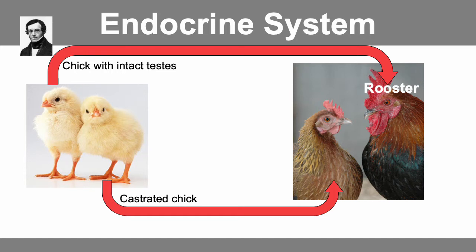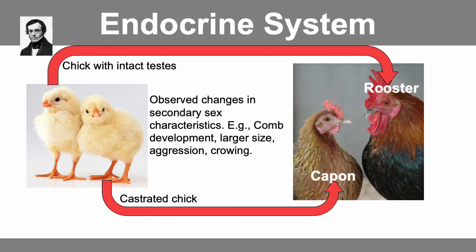A chick with intact testes will become a rooster. If you remove the testes as a chick, you get a capon. It's also important to note that in addition to morphological differences, capons have behavioral differences as well — they don't crow, they don't try to elicit copulations from hens, and they're much less aggressive compared to roosters. Berthold made these observations and wondered what it was about castration or these little pieces of tissue, the testes, that were responsible. Were they directly responsible for this difference in morphology?